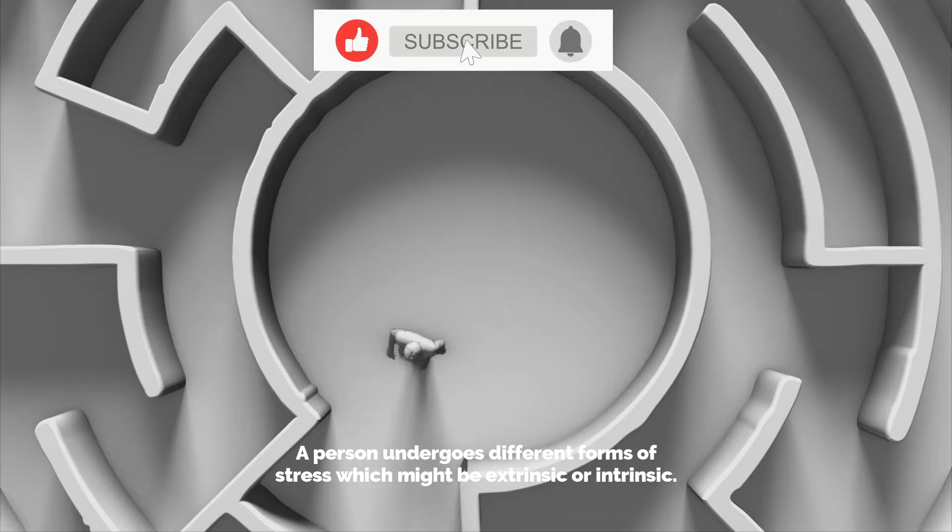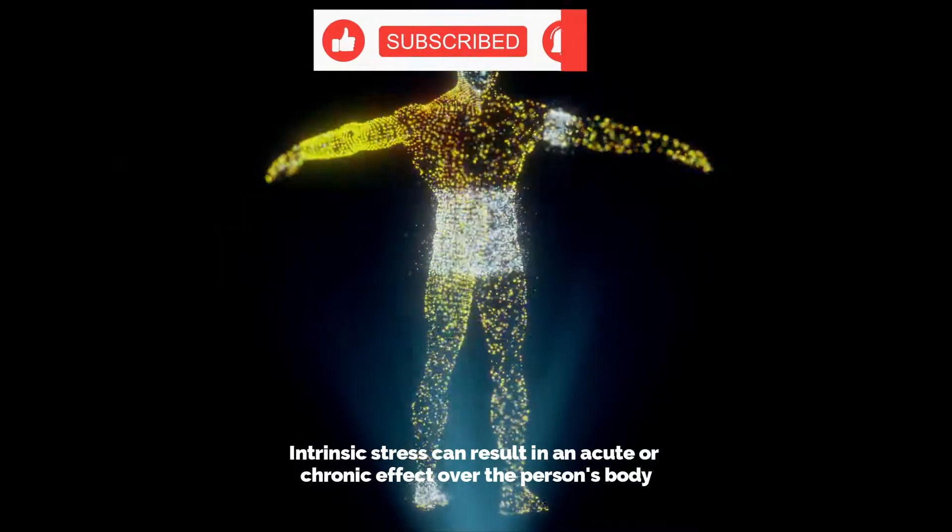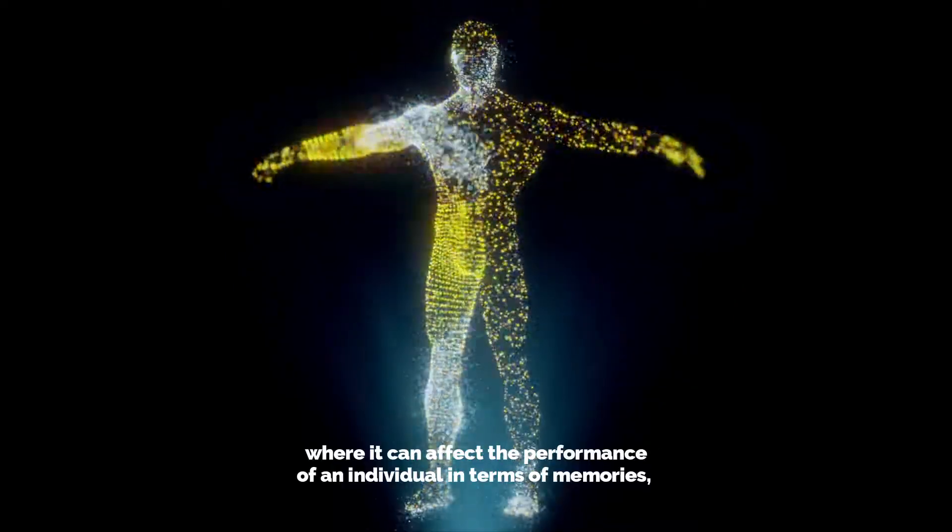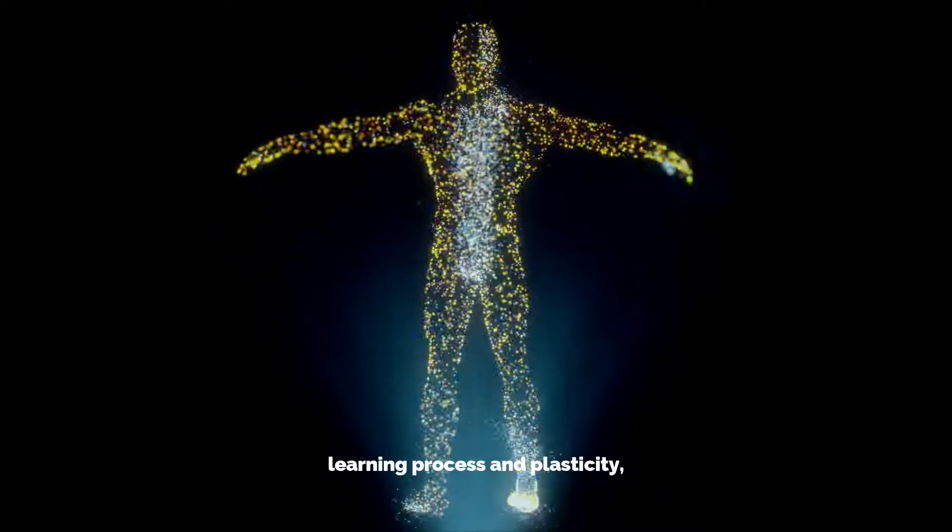A person undergoes different forms of stress which might be extrinsic or intrinsic. Intrinsic stress can result in acute or chronic effects where it can affect the performance of an individual in terms of memories, learning process, and plasticity. In chronic conditions, it can harm the brain structure along with cognition.